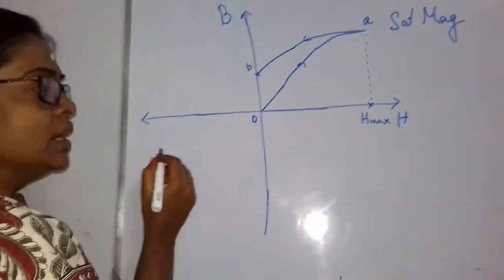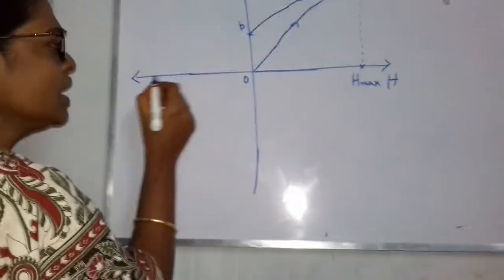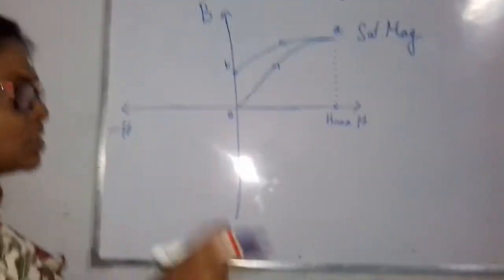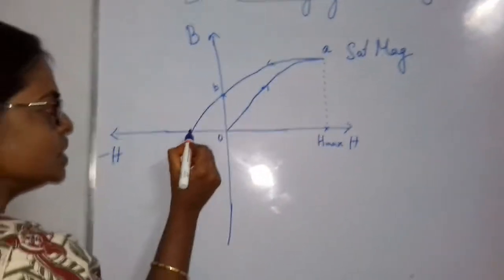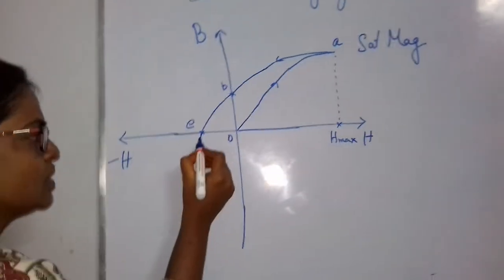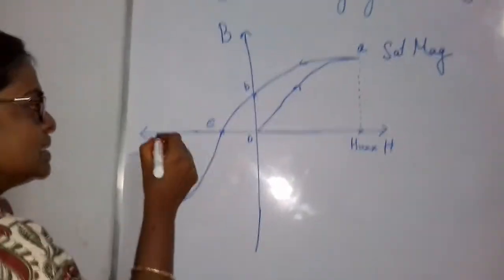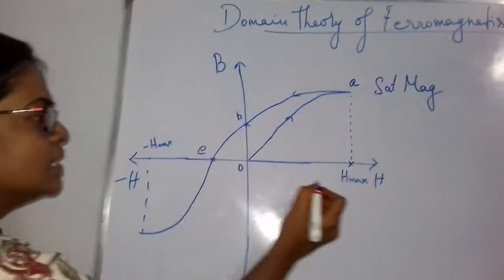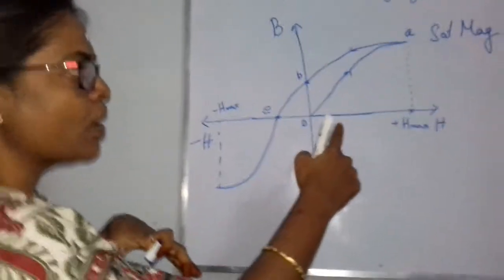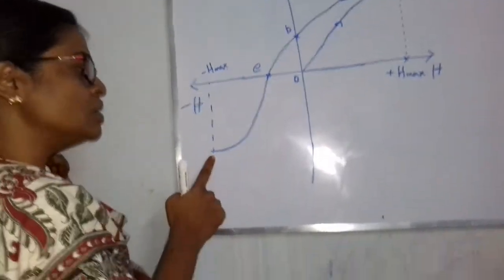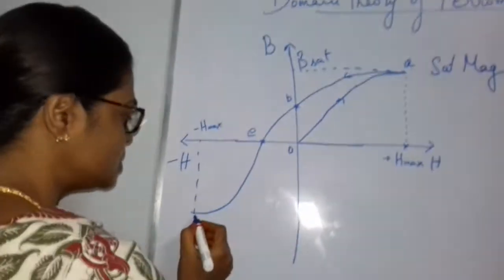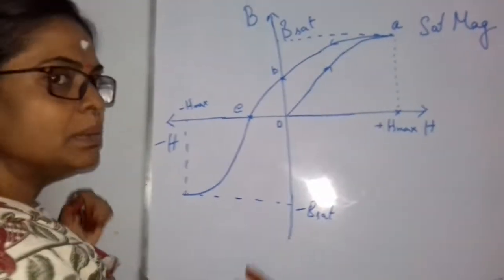Now we slowly increase the magnetic field in the opposite direction — that is, minus H. The magnetic flux lines enter but in the opposite direction, so B drops and falls to zero. We call that point E. We continue to increase the field in the negative direction until it reaches saturation at minus H maximum. There is a symmetrical curve observed in the negative cycle: positive B saturation in the first quadrant and minus B saturation in the negative cycle.